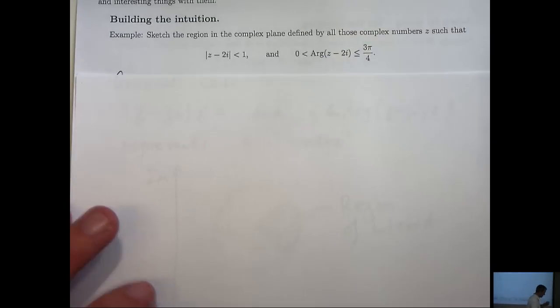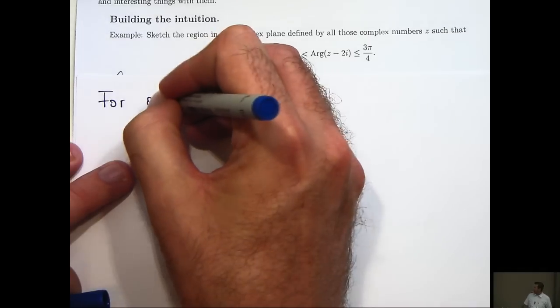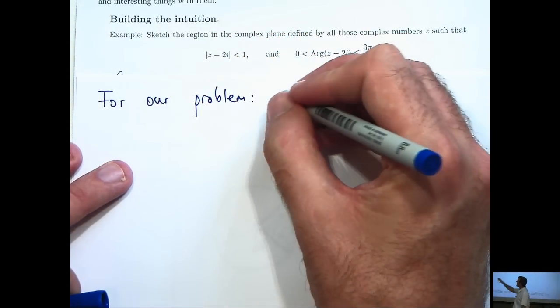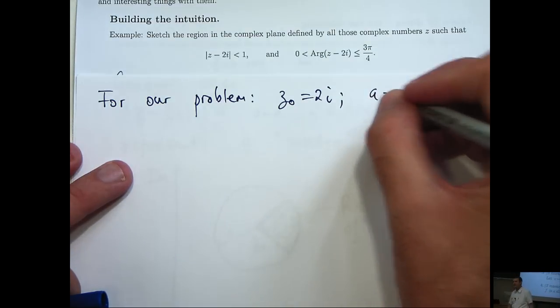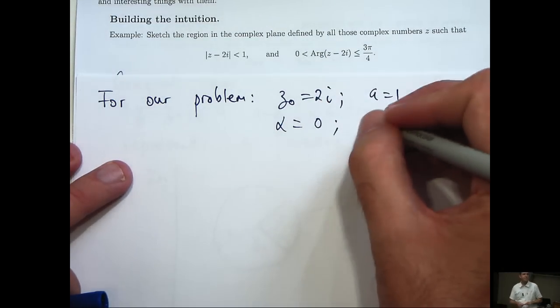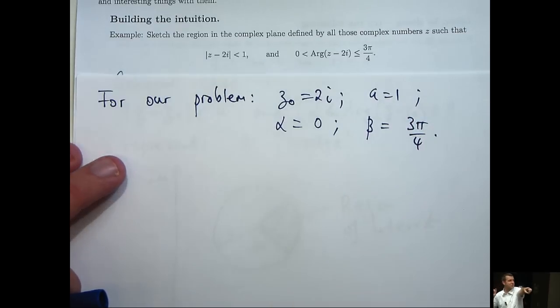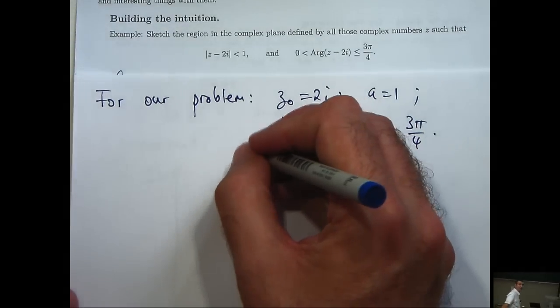So for our problem, z0 equals 2i, a equals 1, alpha equals 0, and beta equals 3pi on 4. So let's construct our wedge and put it all together.